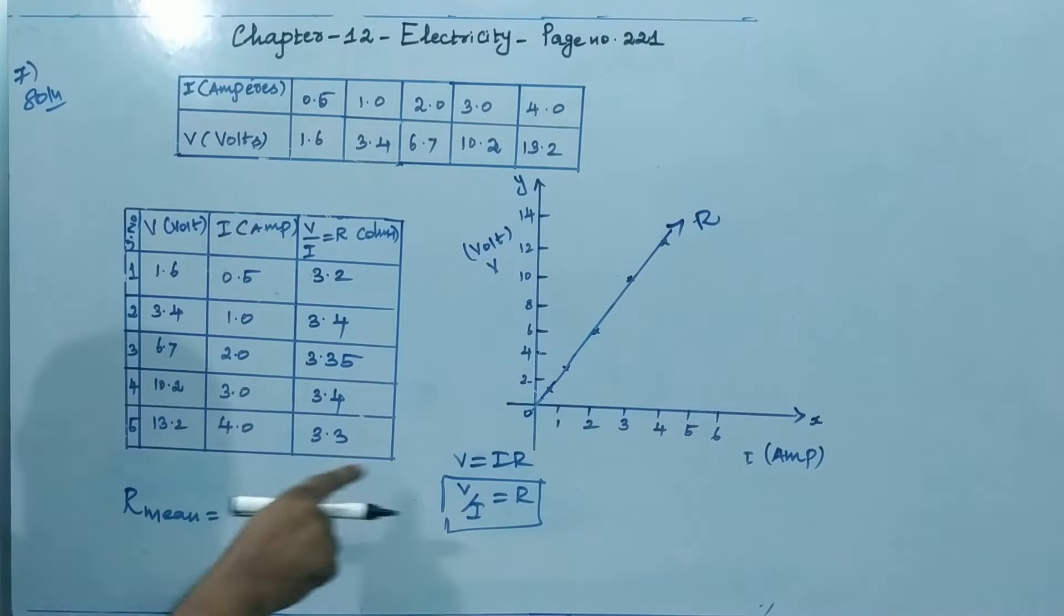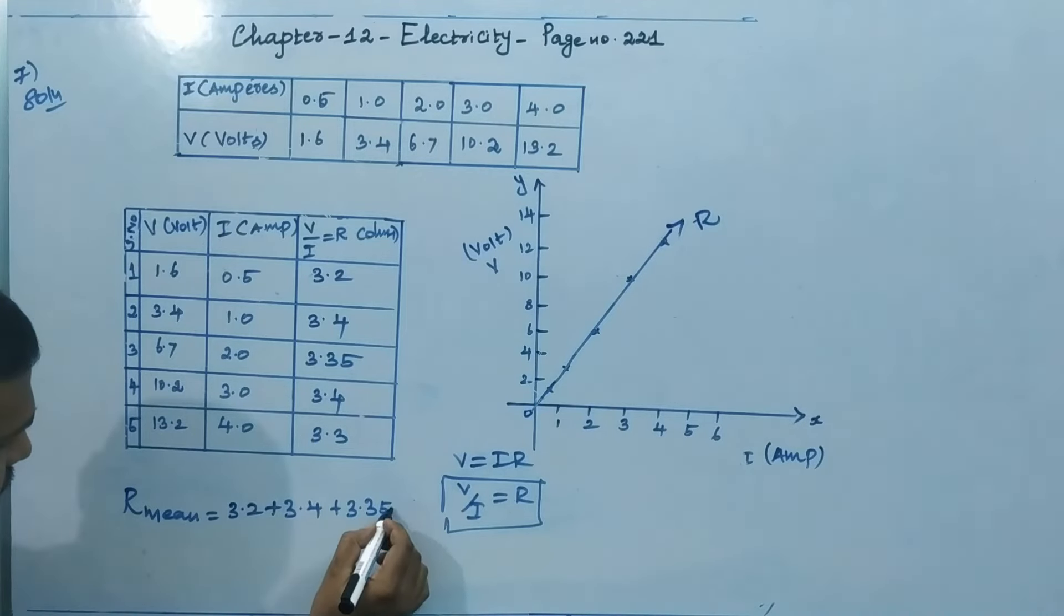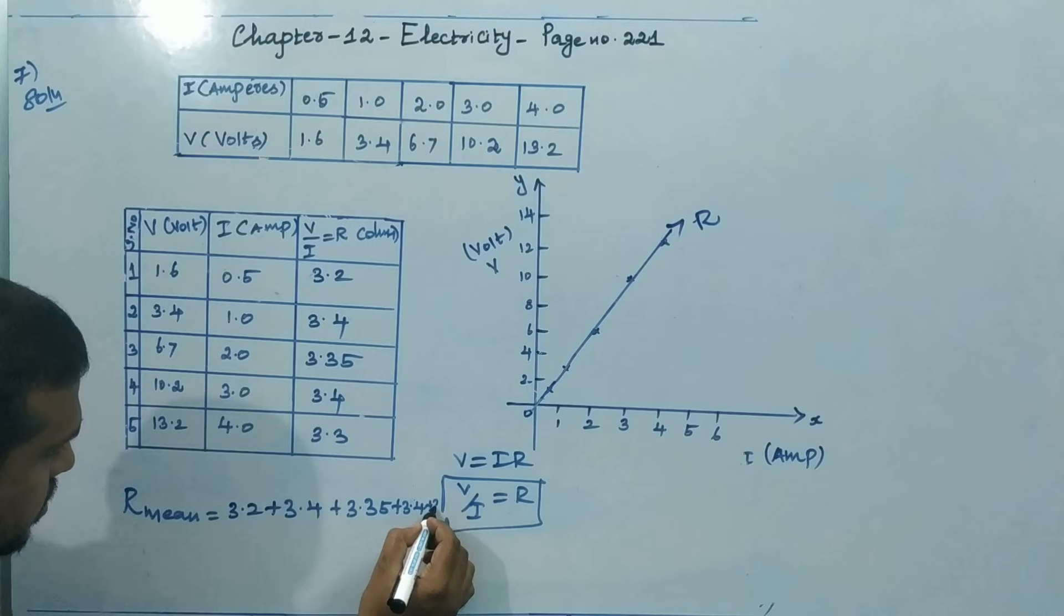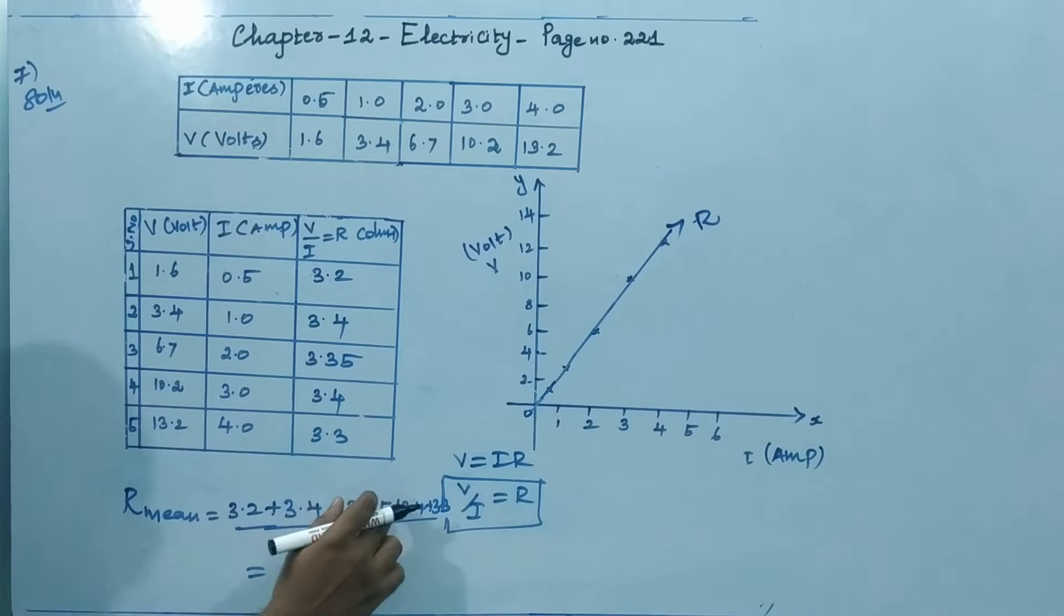The sum of resistances by number of resistances. The sum of resistances is 3.2 plus 3.4 plus 3.35 plus 3.4 plus 3.3. That's 1, 2, 3, 4, 5. So this sum value is 16.65.